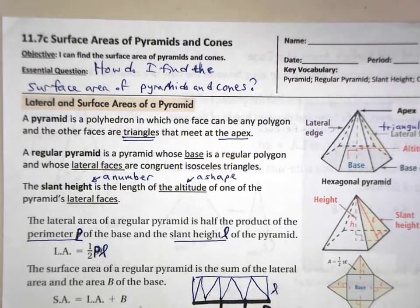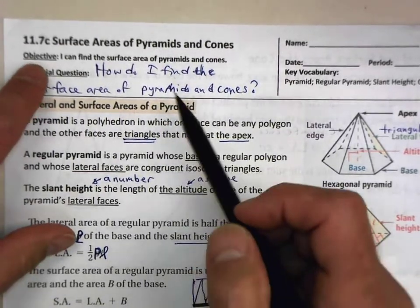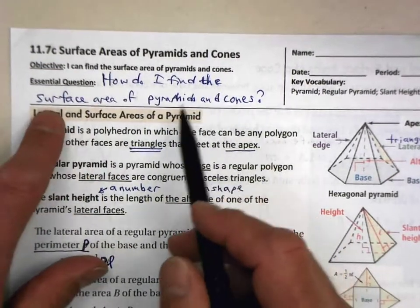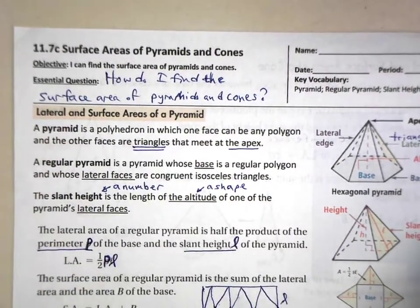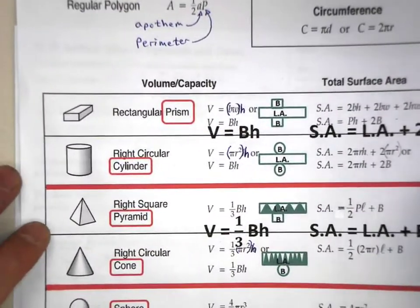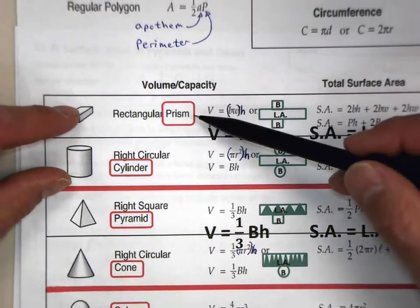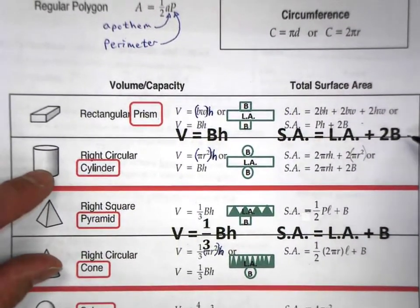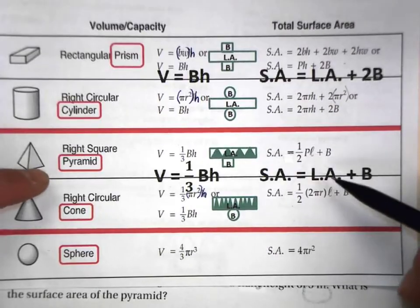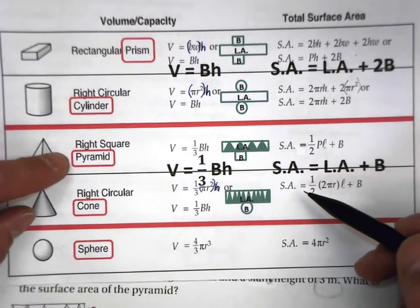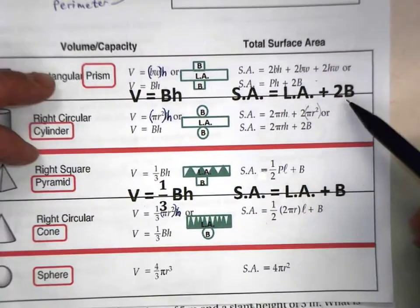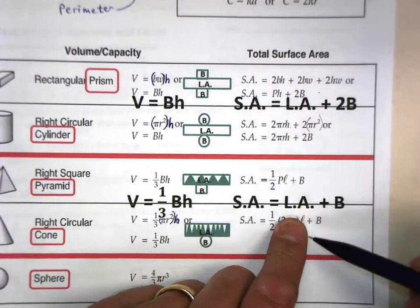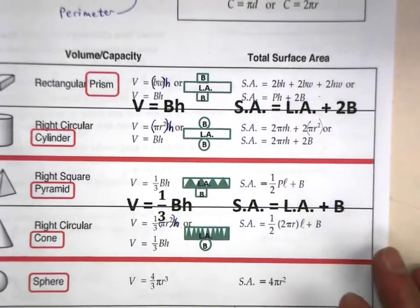Welcome, and thank you for joining. Our goal here is to go through objective 11.7C: how do I find the surface area of cones? We have already gone through volumes of prisms, cylinders, pyramids, and cones. The last thing we looked at was surface area of prisms and cylinders, and now the very last topic is surface area of pyramids and cones. It is very similar, with only one base and some tweaks on the lateral area.